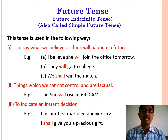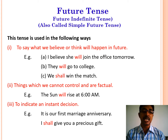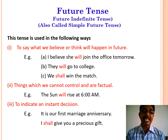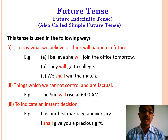Simple future is also used for things which we cannot control and are factual. For example, the sun will rise at 6 am. And simple future tense is also used to indicate an instant decision. For example, it is our first marriage anniversary — I shall give you a precious gift.